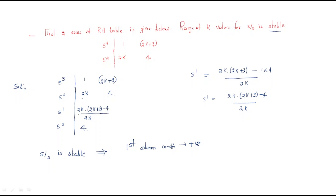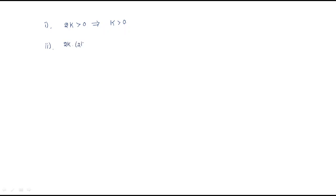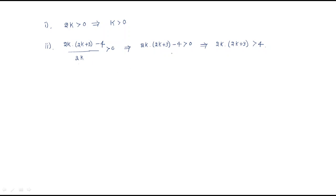The second condition requires the s-power-1 entry to be positive: (2k(2k+3) − 4) / 2k > 0. Multiplying through by 2k, we get 2k(2k+3) − 4 > 0, so 2k(2k+3) > 4. Expanding: 4k² + 6k − 4 > 0.